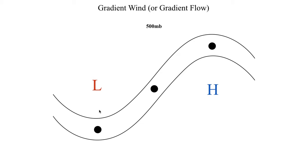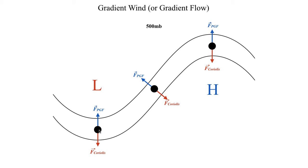If we draw the force balances: with lower pressure to the north and higher pressure to the south, the pressure gradient force points to the north. To balance that, the Coriolis force must point in the opposite direction — toward the south at the trough base, toward the south at the ridge apex, and toward the southeast at the interface. The only way the Coriolis force can point this way in the northern hemisphere is if the wind is traveling from west to east.